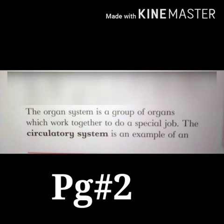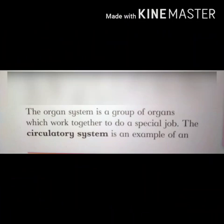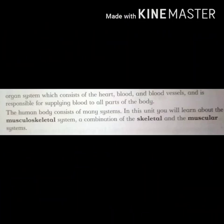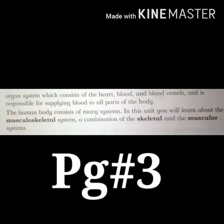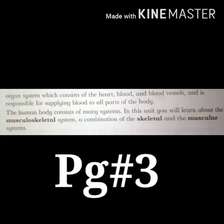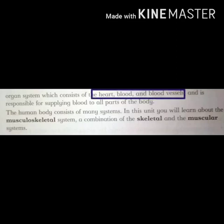The organ system is a group of organs which work together to do a special job. The circulatory system is an example of an organ system — look at page number 3 — which consists of the heart, blood, and blood vessels, and is responsible for supplying blood to all parts of the body.